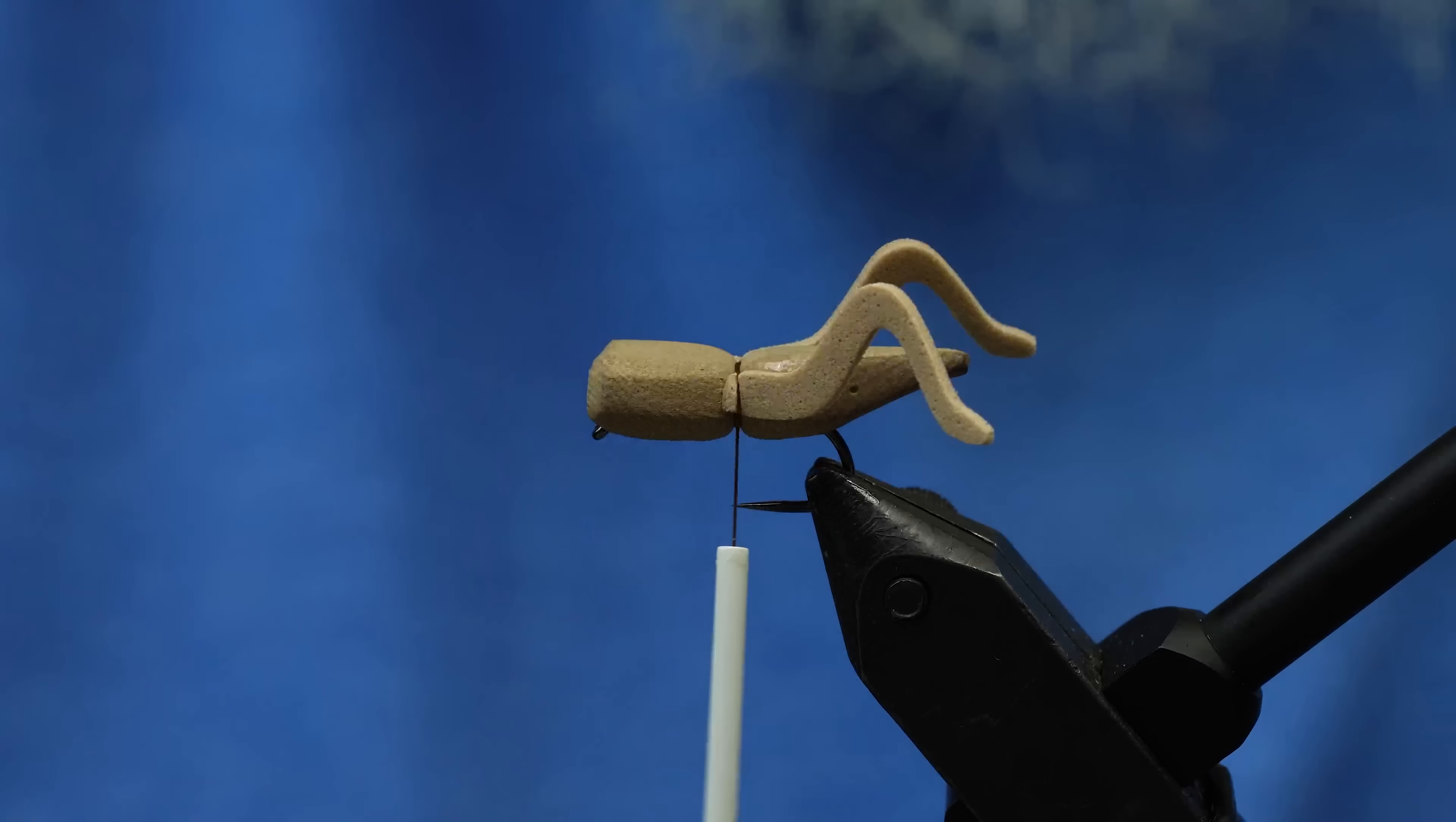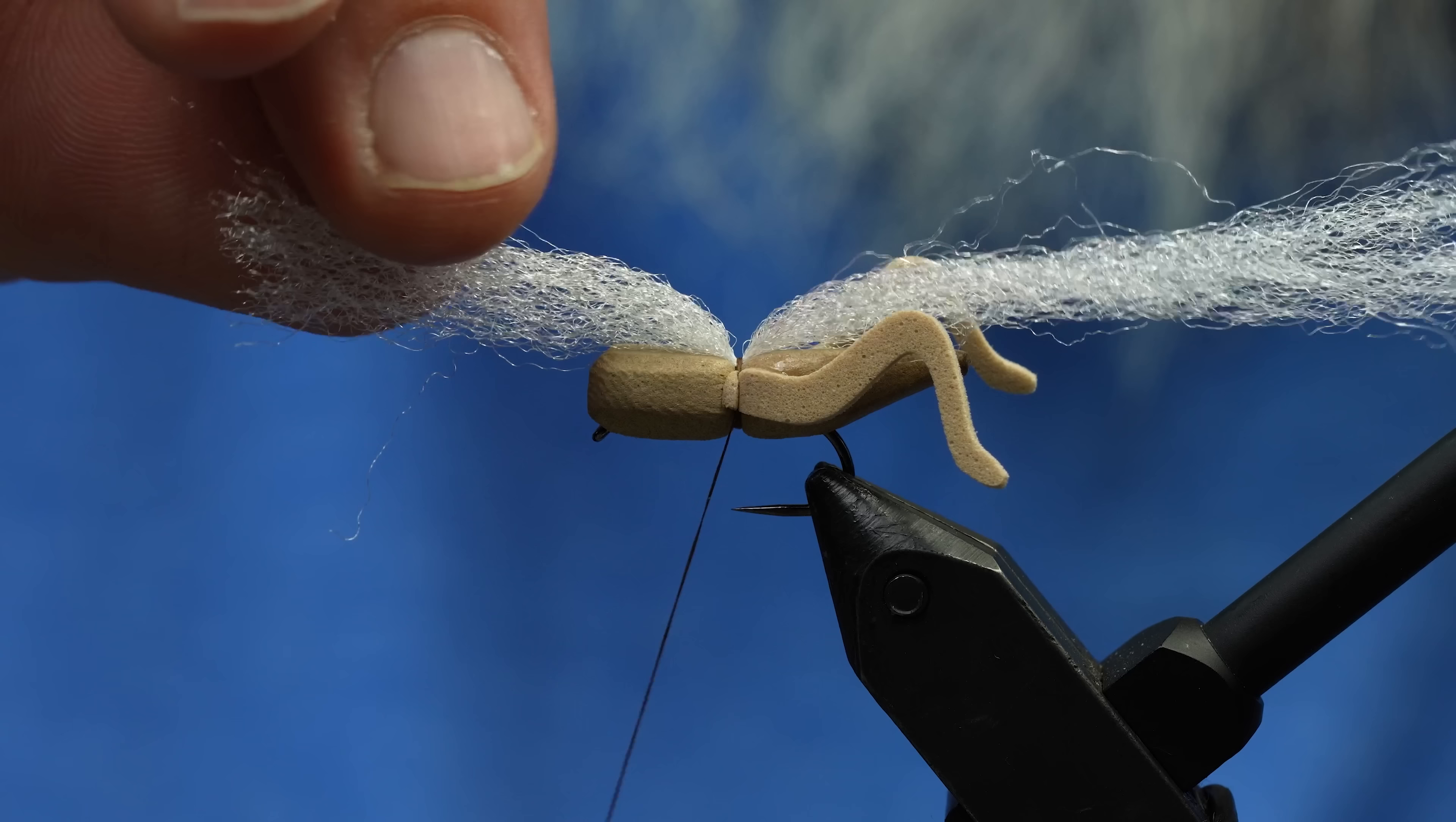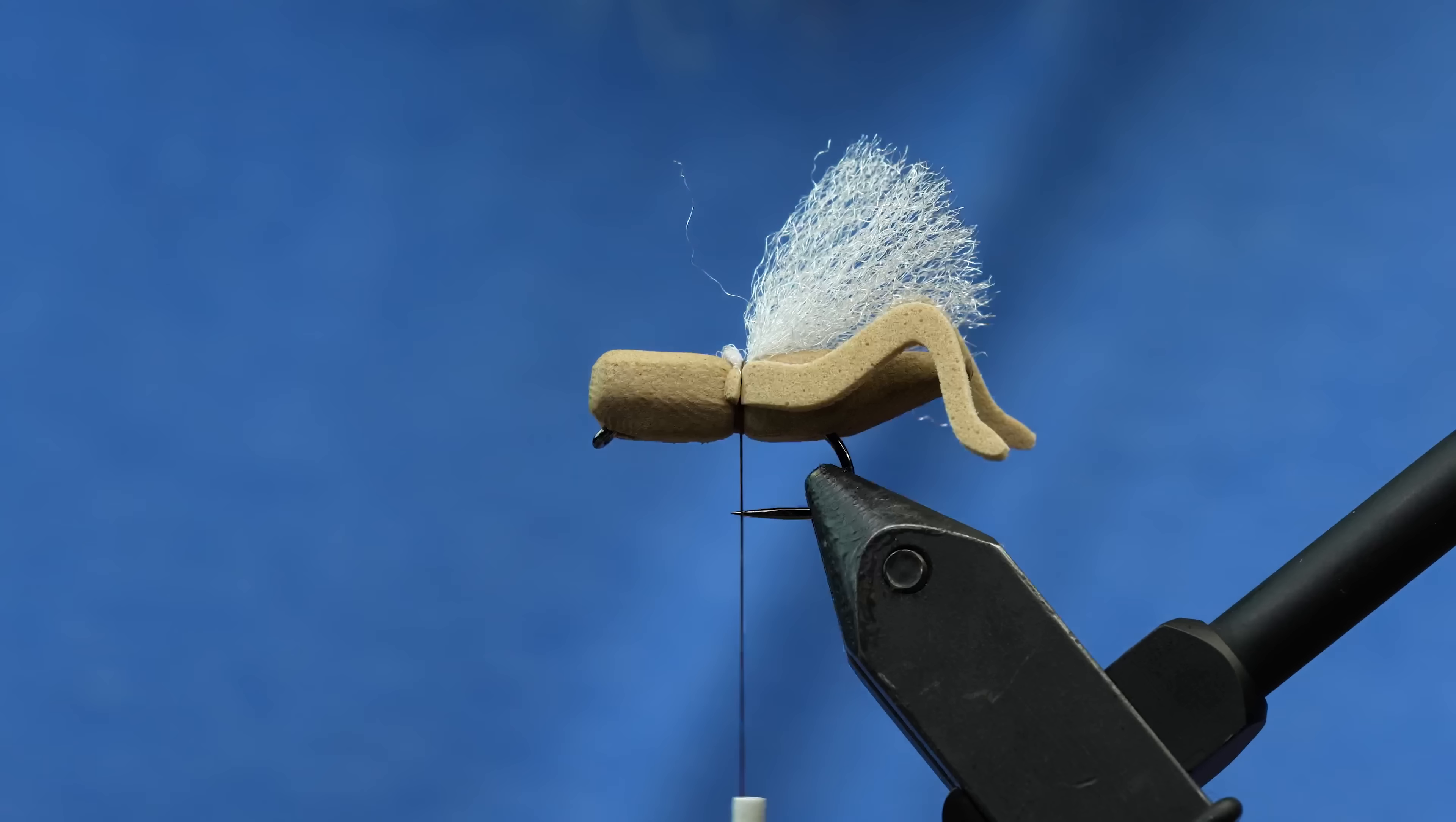Grab your favorite overwing material for your chubbies or whatever. This is, I think, I can't even remember what this one is. Just some type of parachute post material. We'll post it in the recipe. So I've just taken however much I want the wing to be and then I just double it over. But to double it over, I kind of push it forward so that there's a little hoop or loop of material I can really crank down. So now our wing's tied in. I'm going to just trim that about just like that.